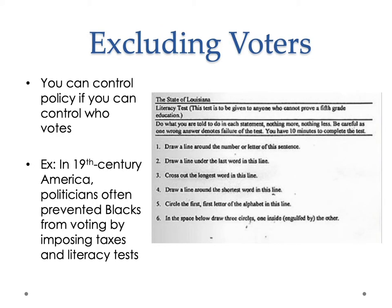Excluding voters has been critical to a lot of political action. Many political parties work very hard to exclude certain kinds of voters—this might mean that immigrants can't vote, or that they can vote in municipal elections but not in federal elections. It could also mean that particular groups can't vote. You can control policy if you can control who votes. In 19th century America, politicians prevented Blacks from voting by imposing taxes and literacy tests.